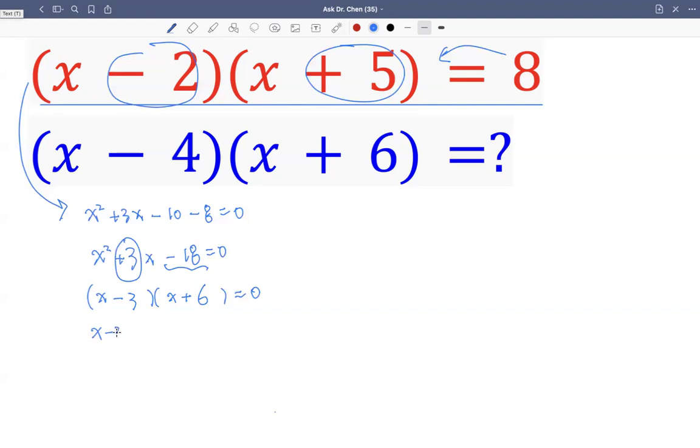So by the zero property, each factor can be zero because the product is zero. The first factor is zero gives us x equals three as a solution. The second factor is zero gives us x equals negative six as a solution.